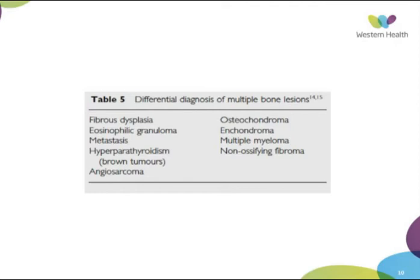Multiple bone lesions — fibrous dysplasia is a classic, eosinophilic granuloma is also a classic, and enchondromas are also there. This paper said most of these conditions are usually diagnosed by plain film, and you can get away with most of them. But nowadays we tend to over-investigate lesions as a safety factor, as there have been some benign-looking lesions that were missed and later found to be malignant.